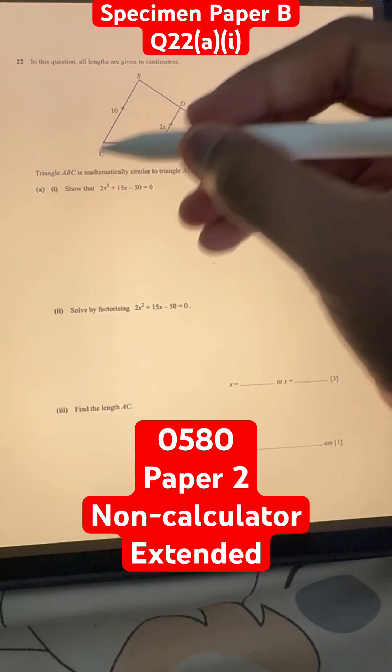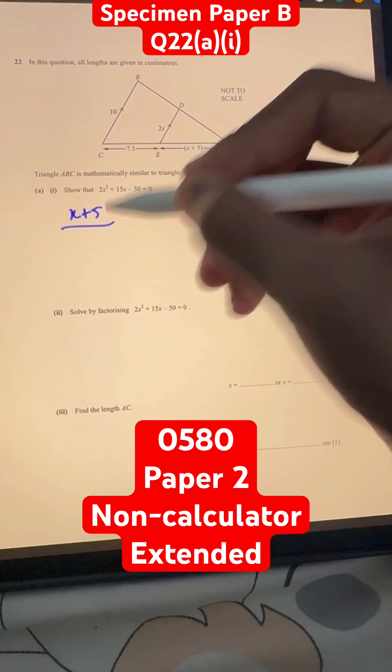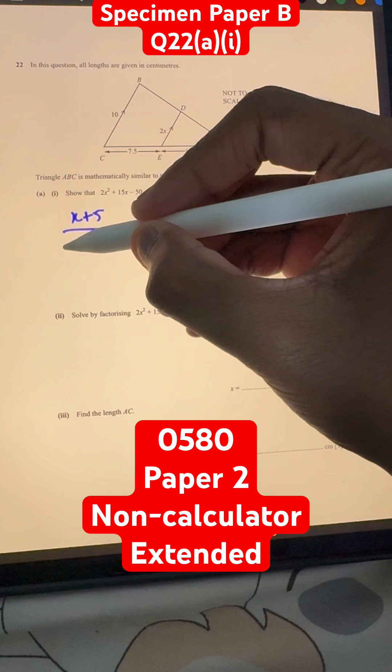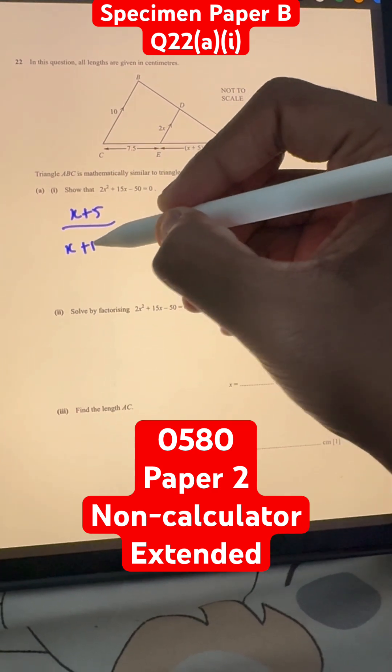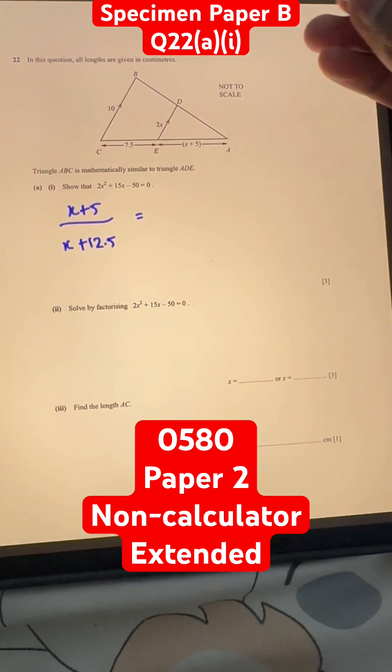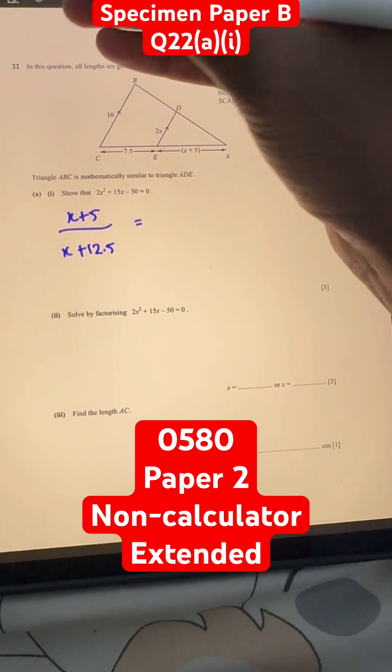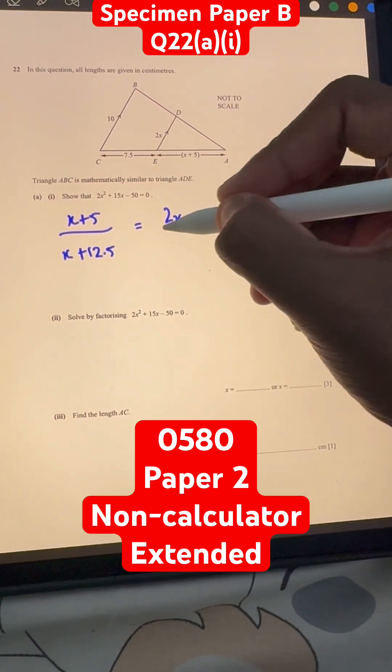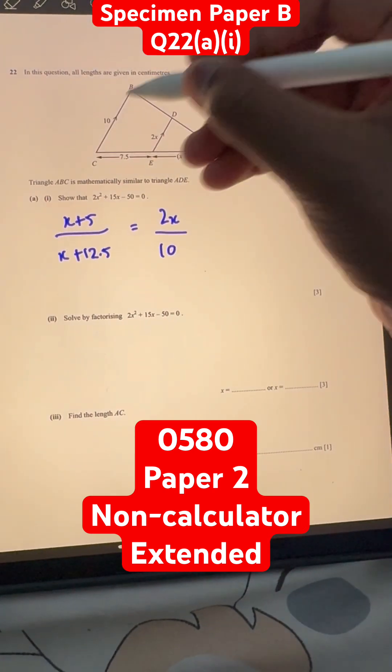So, we get x plus 5 divided by x plus 5 plus 7.5, so x plus 12.5. Is equal to, now, this side length, which is 2x, divided by 10, which is the larger side length.